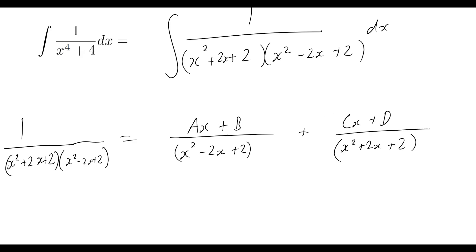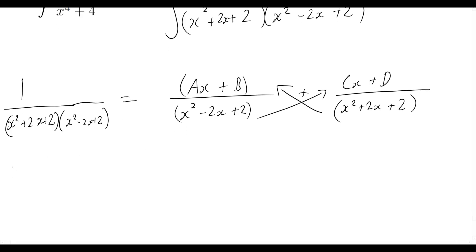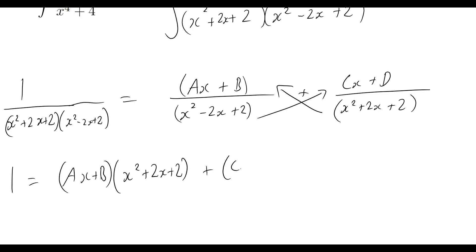There's some theory behind why we set it up exactly like this. By cross multiplication to get a common denominator, we end up with the expression: 1 equals (ax + b)(x squared + 2x + 2) plus (cx + d)(x squared minus 2x + 2).